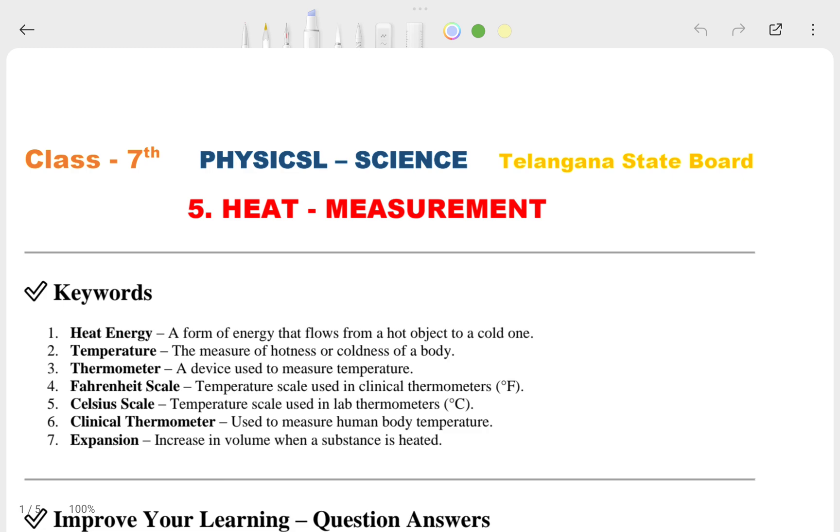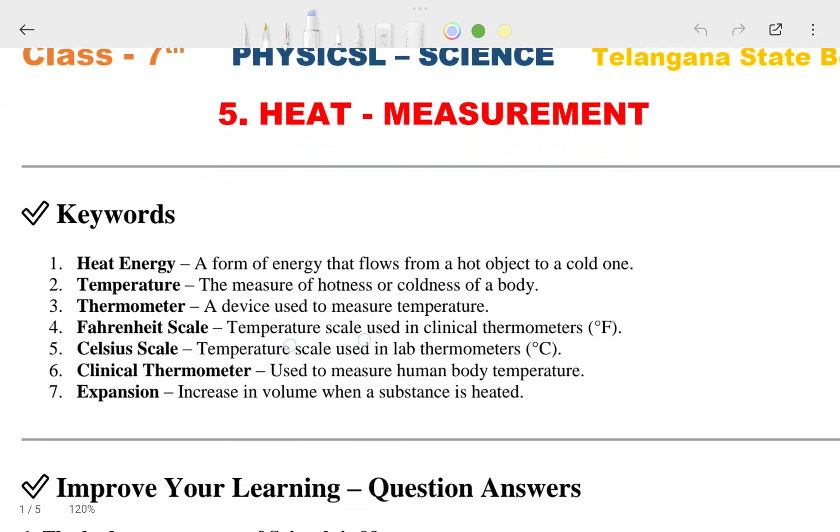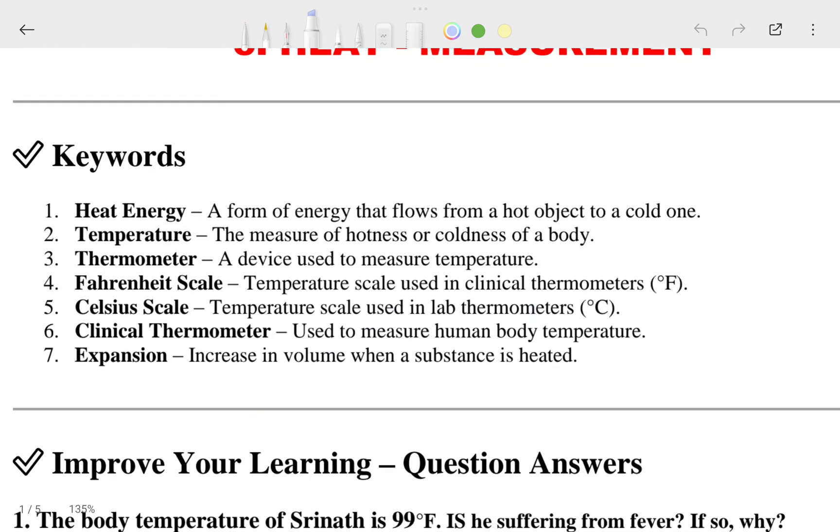If you have any kinds of doubts according to this chapter, you can look at it in your textbook and clear your doubt. So we will start from the keywords here. The first keyword is heat energy, then temperature, thermometer, Fahrenheit scale, Celsius scale, clinical thermometer, and expansion. These are the seven keywords.